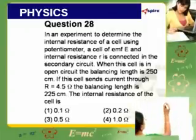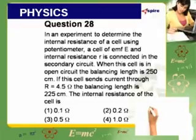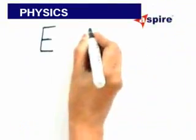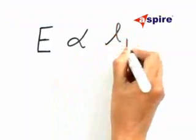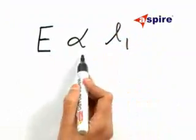Here, a cell in the open circuit. We have to balance the EMF of a cell in the open circuit and let us take the balancing length as L1. As per the potentiometer principle, E is proportional to L1.